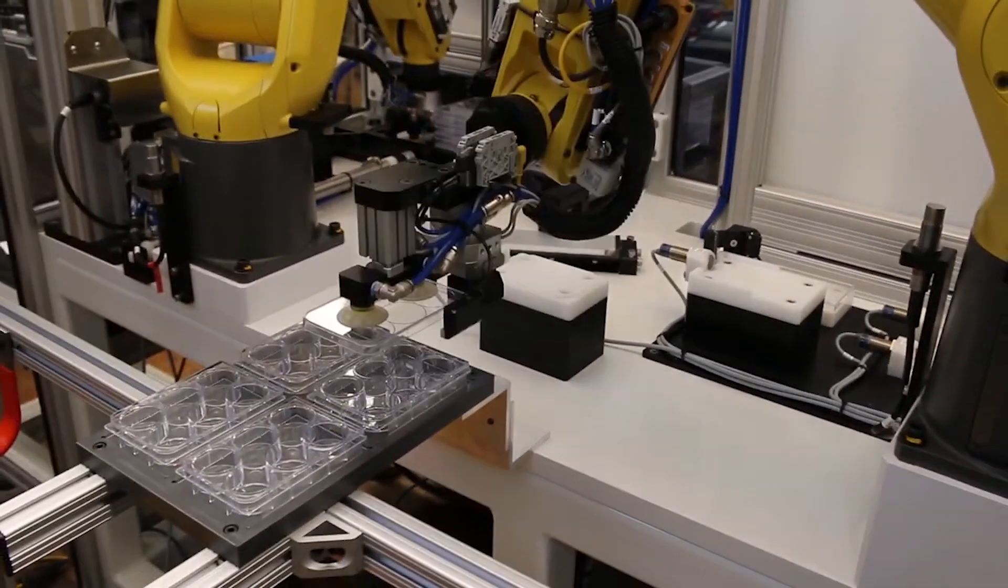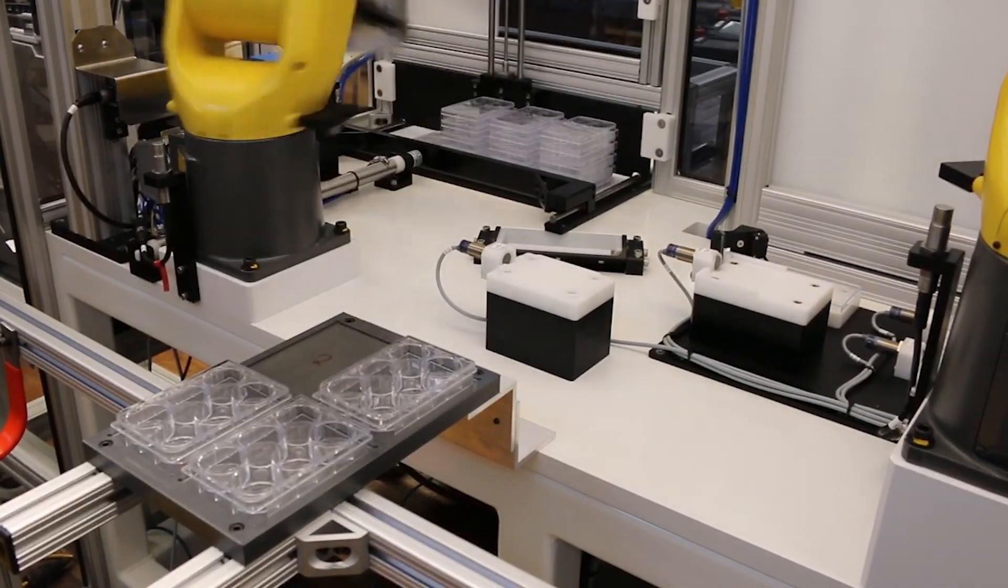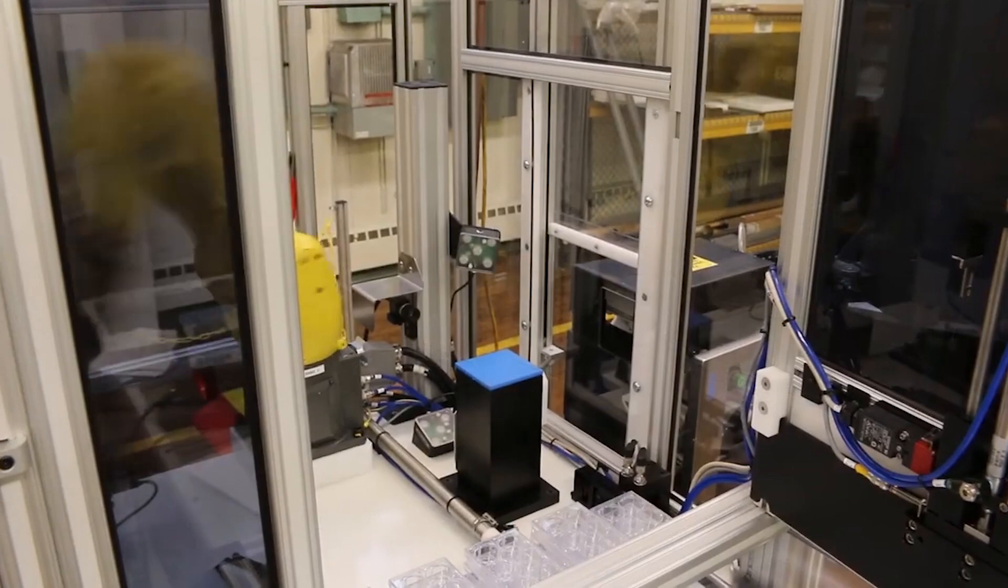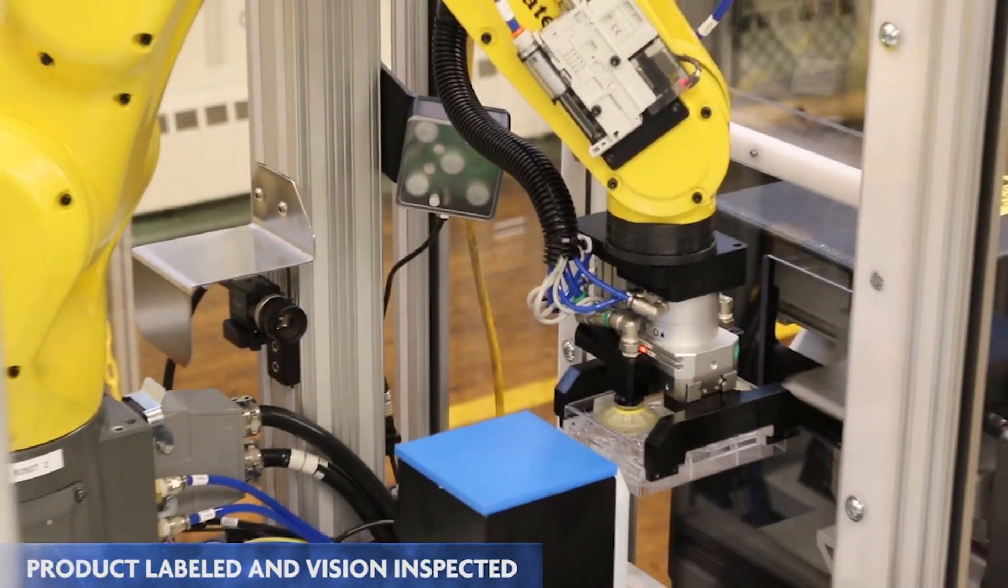A second FANUC LR Mate is used to unload the trays. The robot unloads the tray, presents it to a labeler, then a vision inspection station.